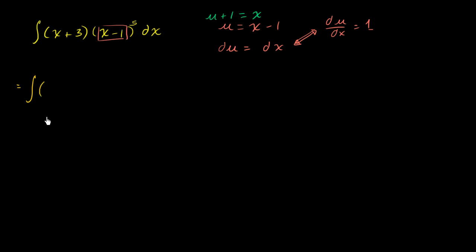So x is equal to u + 1. And I'm just trying to see if I can do something to simplify this expression. So x is u + 1, x is u + 1. Then we have our plus 3 there, plus 3 times (x - 1)^5. x - 1 was u. That's the simplification we wanted to make. So times u^5. And dx is the same thing as du. So du.